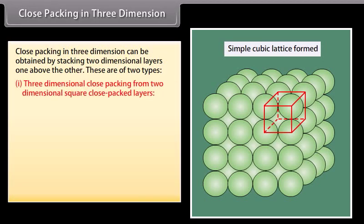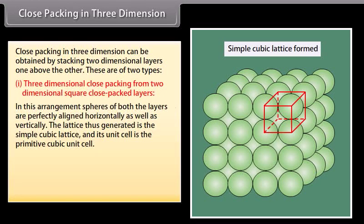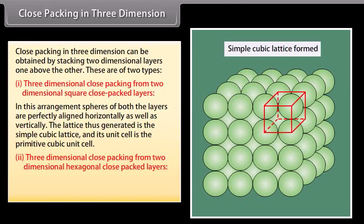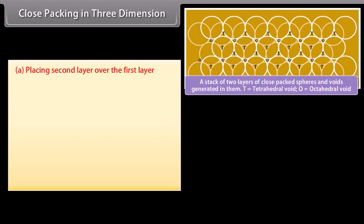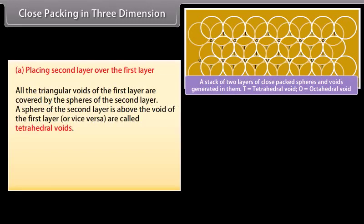Three-dimensional close packing from two-dimensional square close-packed layers: the spheres of both layers are perfectly aligned horizontally as well as vertically, generating a simple cubic lattice whose unit cell is the primitive cubic unit cell. For three-dimensional close packing from two-dimensional hexagonal close-packed layers, layers are placed one over the other. All the triangular voids of the first layer are covered by spheres of the second layer. Where a sphere of the second layer is above the void of the first layer, these are called tetrahedral voids; voids surrounded by six spheres are called octahedral voids.